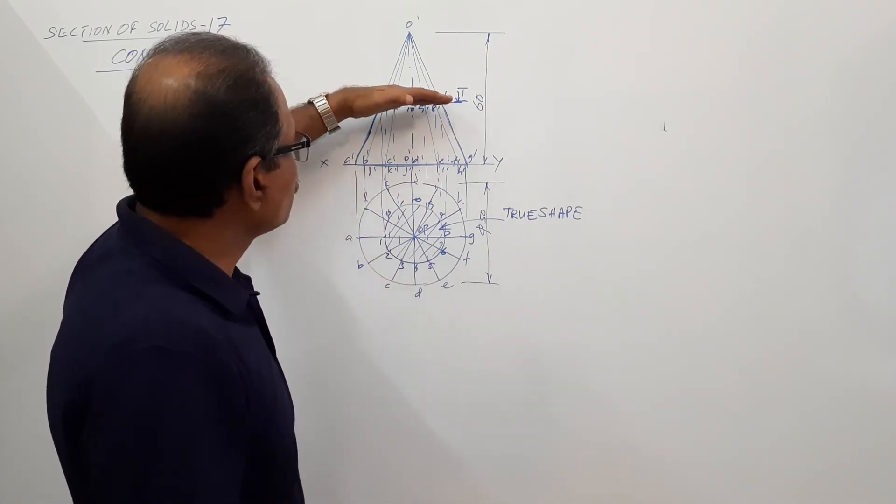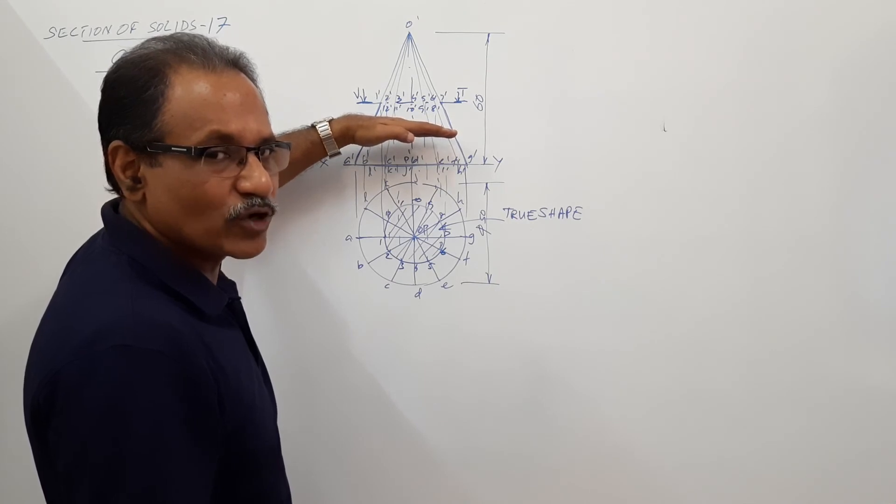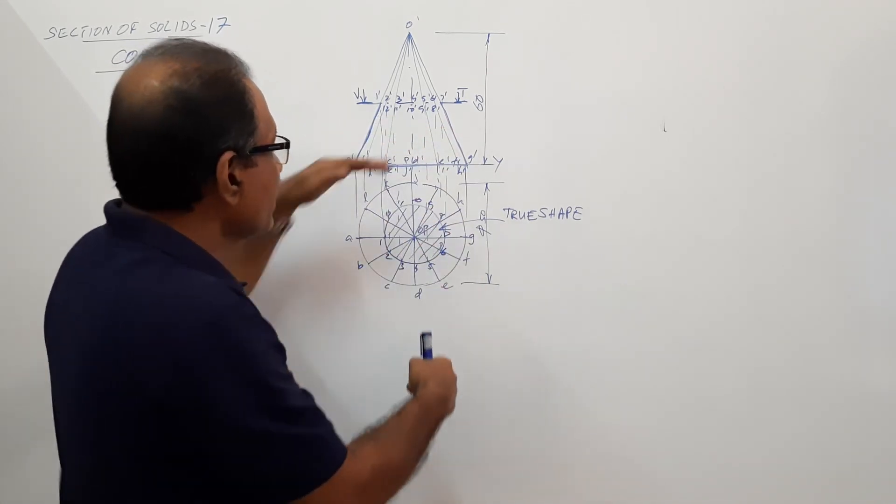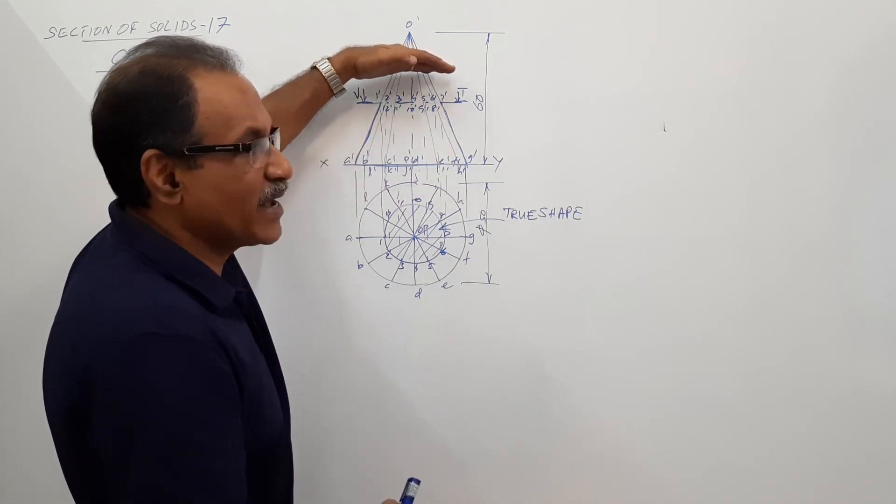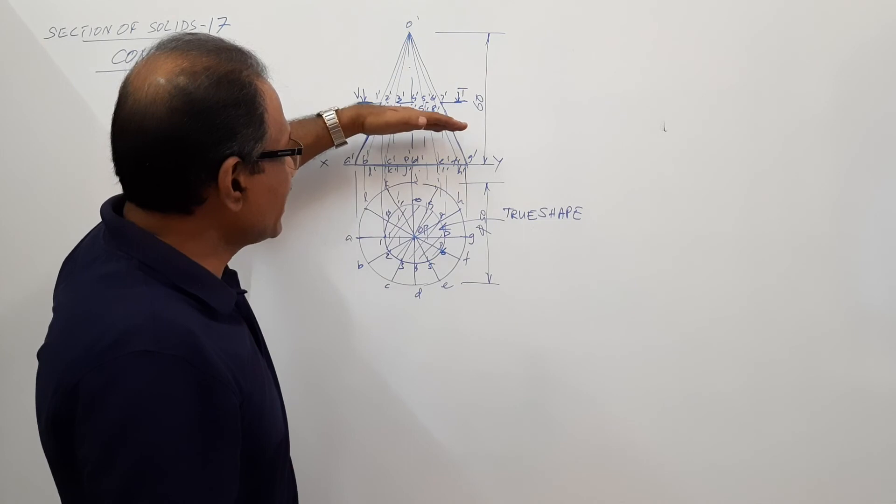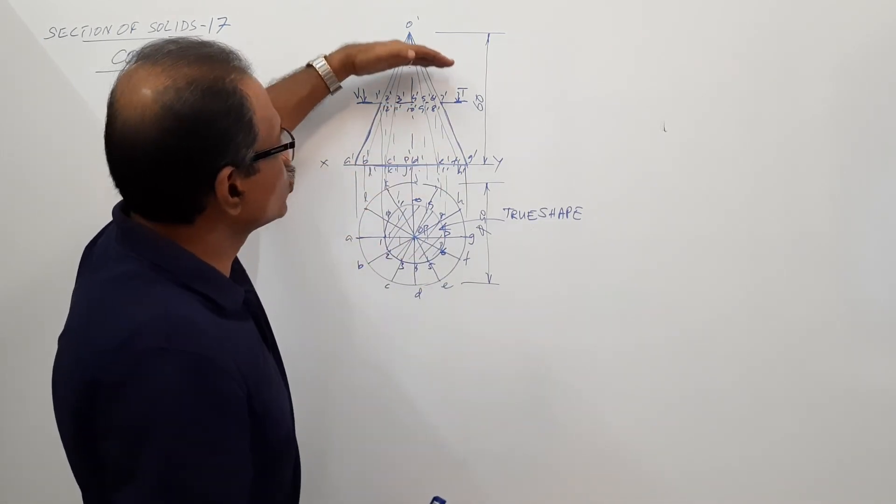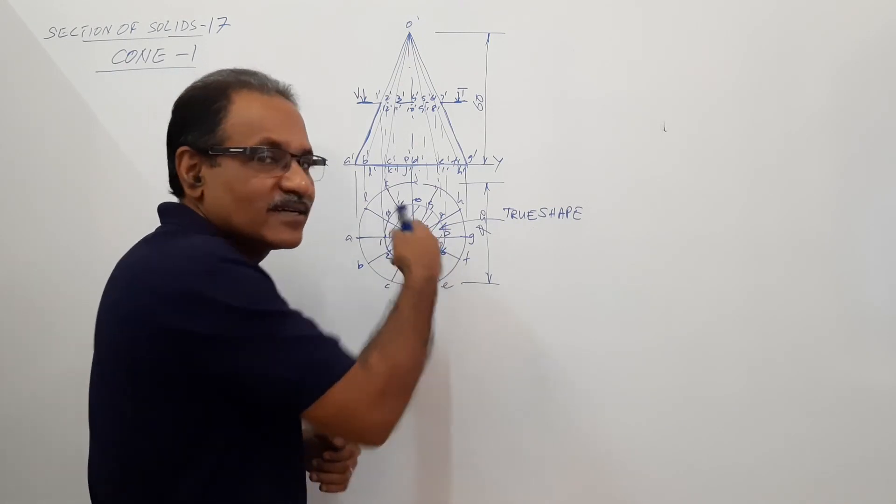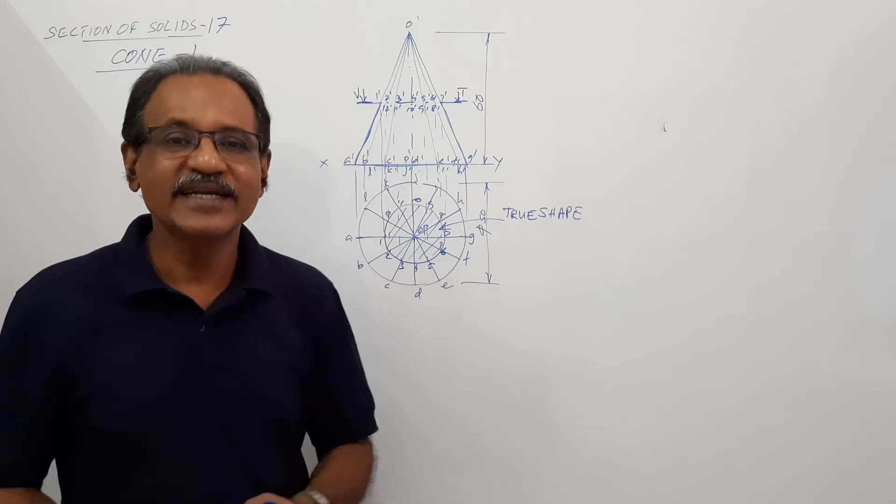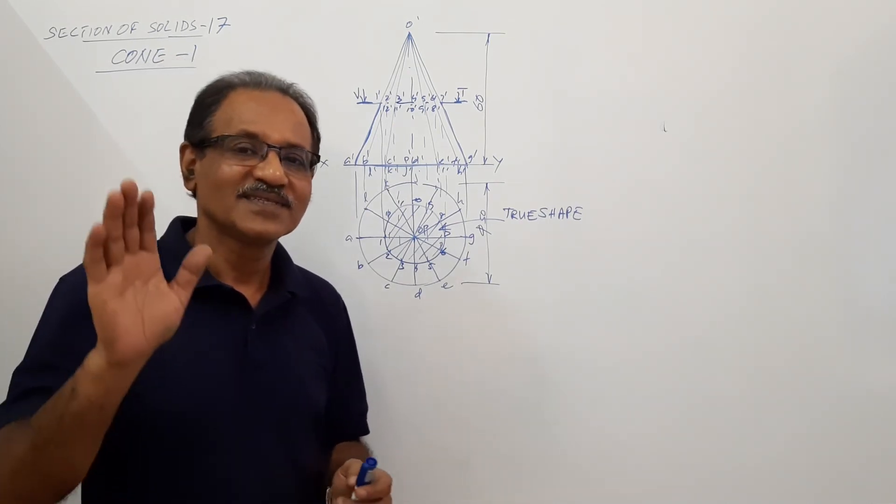So if the cutting plane is one-fourth from the base, this will be three-fourths diameter. If cutting plane is three-fourths from the base, the circle is one-fourth diameter. If the cutting plane is one-third, this is two-thirds. If the cutting plane is three-thirds from the base, this is one-third. By principle of similar triangles, you can decide the diameter of the section.